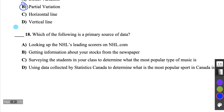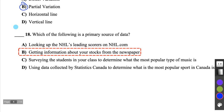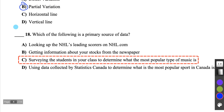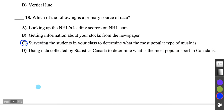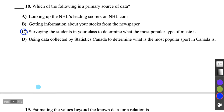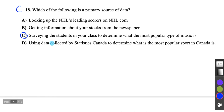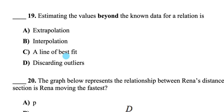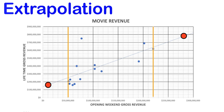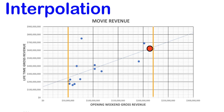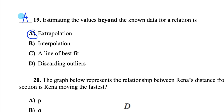Question 18: Primary source of data means data you're collecting yourself. Looking up scores on NHL.com — their staff collected those stats, not you, so that's secondary. Getting information from a newspaper — also secondary. Conducting a survey of students in your class — that's primary because you're asking the questions and collecting the data yourself. Question 19: Estimating values beyond the known data for a relation is called extrapolation, as opposed to interpolation which is estimating within the data set. We use the line of best fit for both.